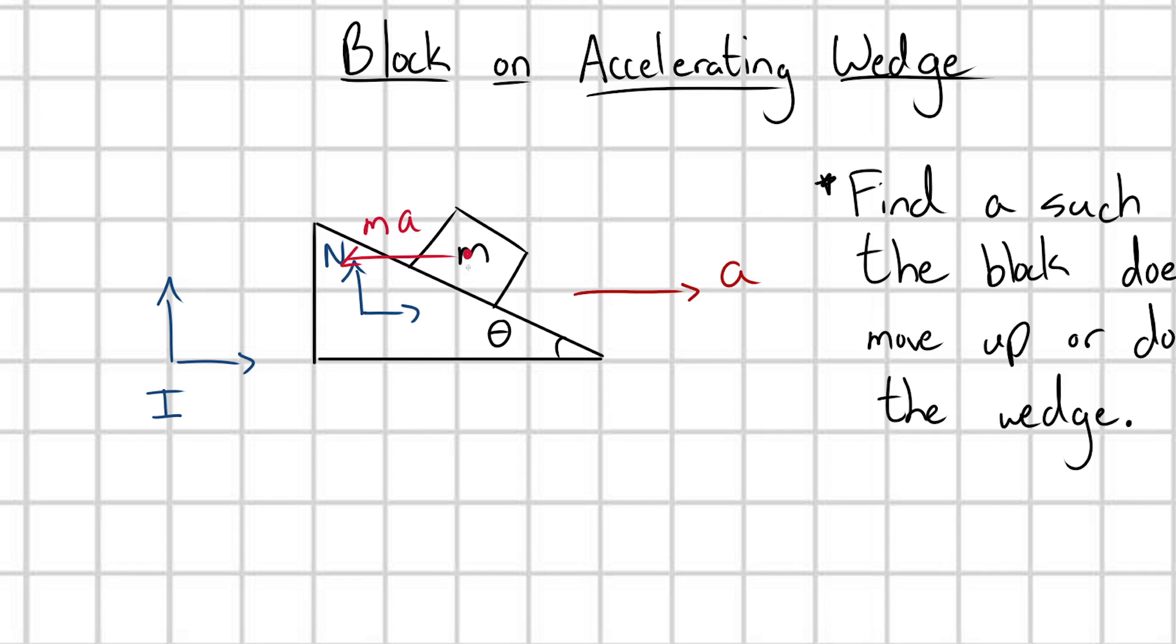And next we're just going to add in our regular forces from any type of Newton's law problems. We're going to have gravity pulling the block down, M G, and we're going to have a normal force N due to the contact of the block in the wedge. So we have this interplay of effectively three forces in the N frame.